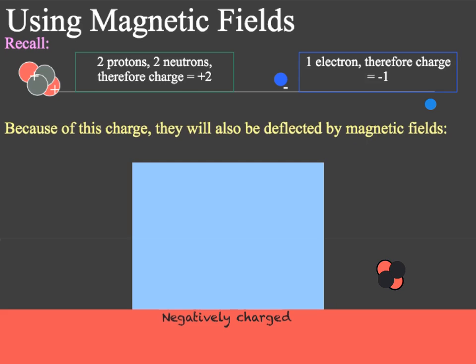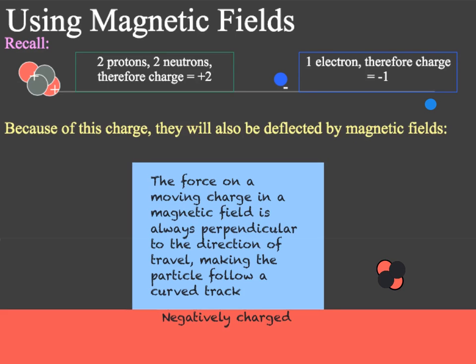When the charged particles move into a magnetic field, they experience the force. This causes a perpendicular change to its direction of travel, making the particle follow a curved track. The direction of the force on the particle depends on its charge. Therefore the path of a negatively charged and positively charged particle will be different and they will curve in opposite directions.